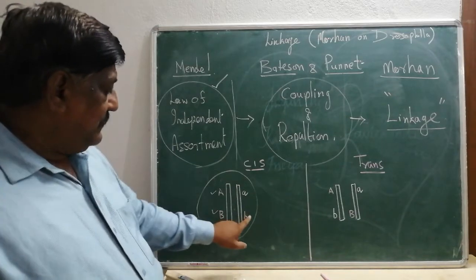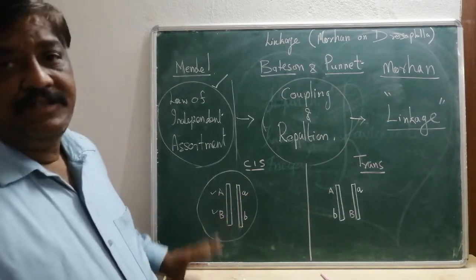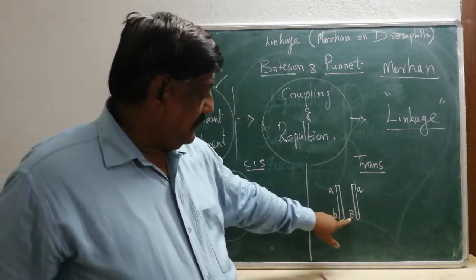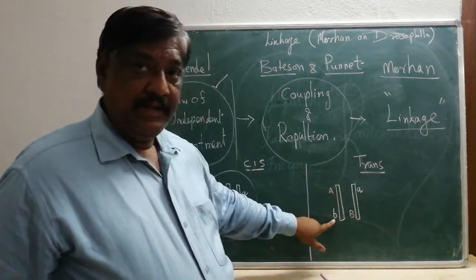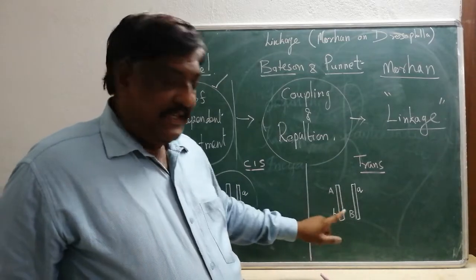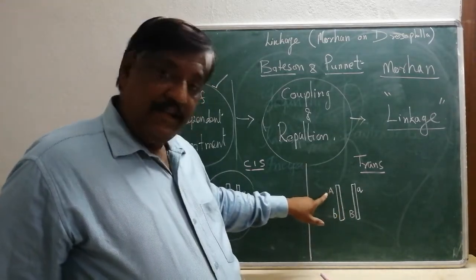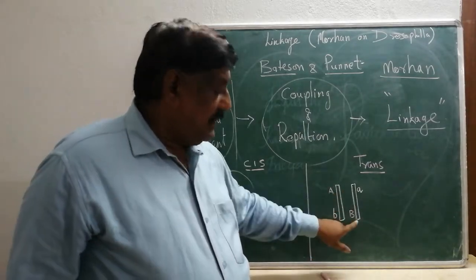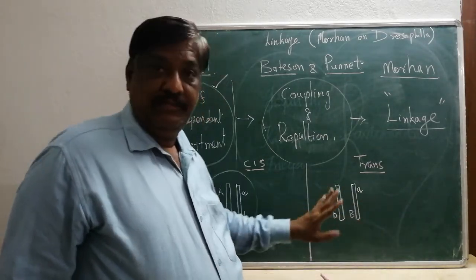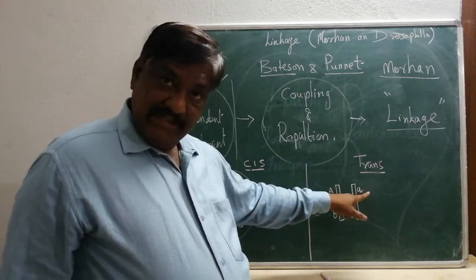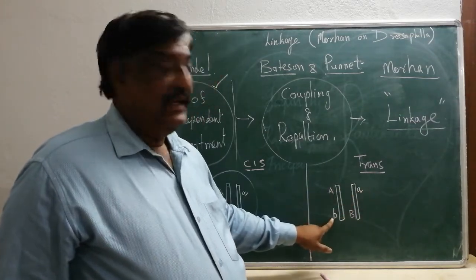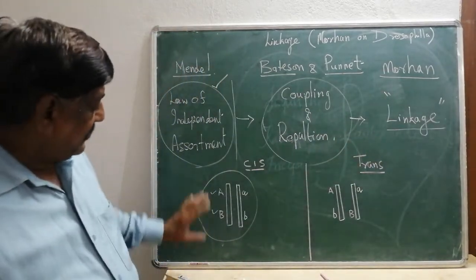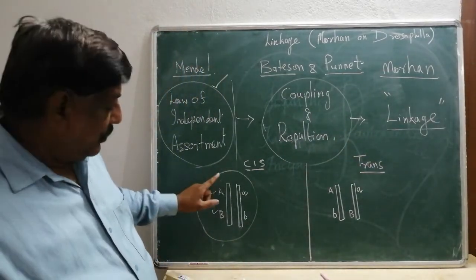What is trans arrangement? Trans means transferred. In trans arrangement, gene B is shifted to the other chromosome and gene A is shifted accordingly. So capital A and capital B are on separate chromosomes — one dominant gene is in one chromosome and the other dominant gene is in the other chromosome, with one recessive on each. This type of arrangement is called trans arrangement.